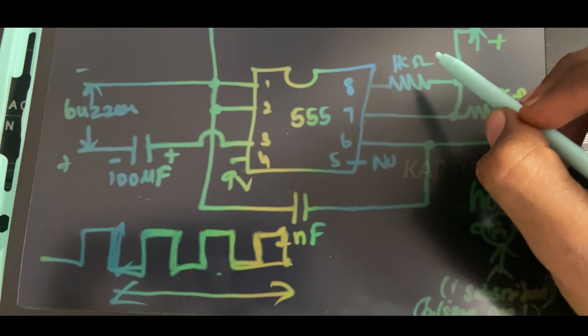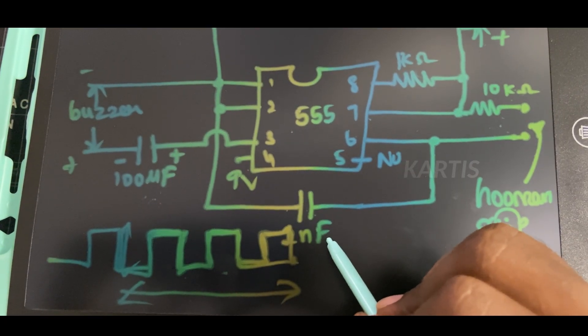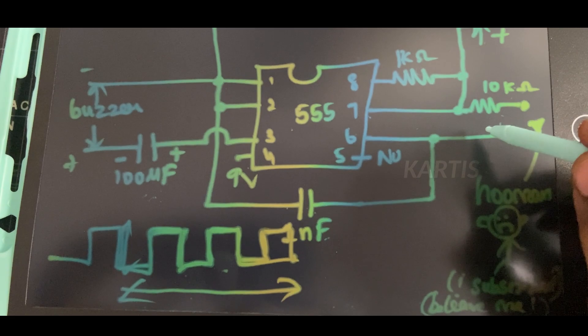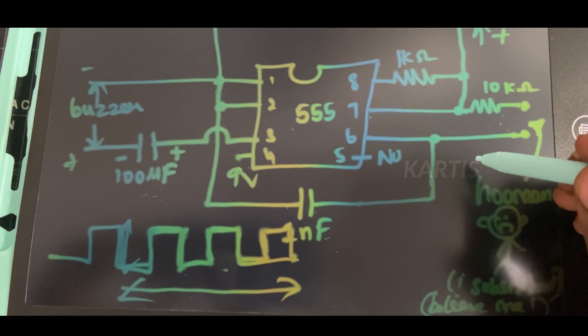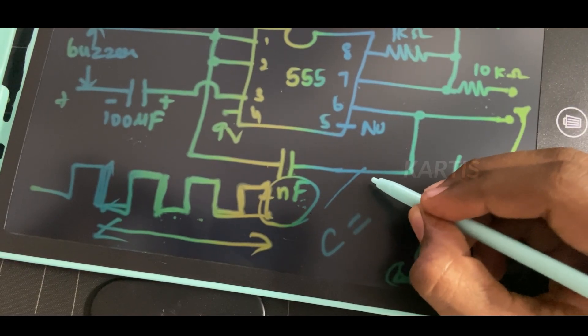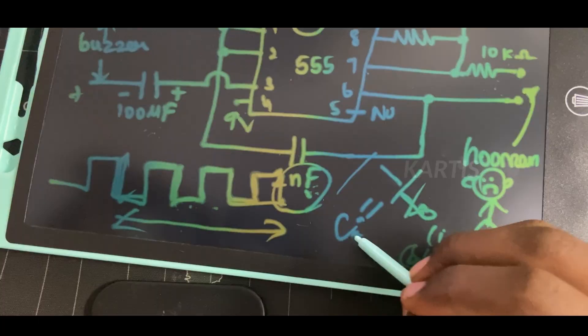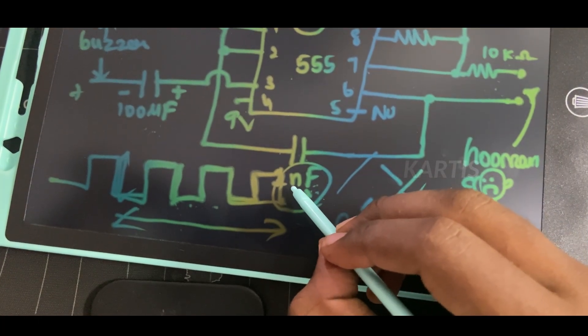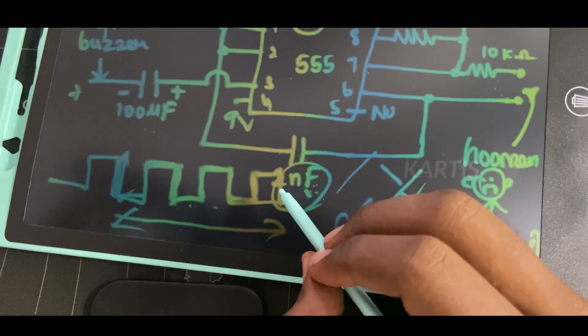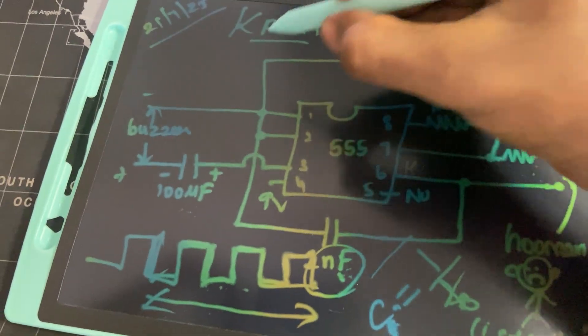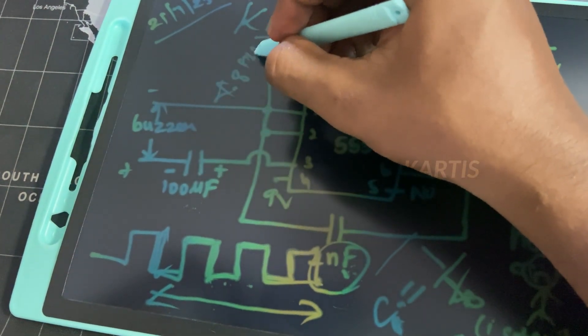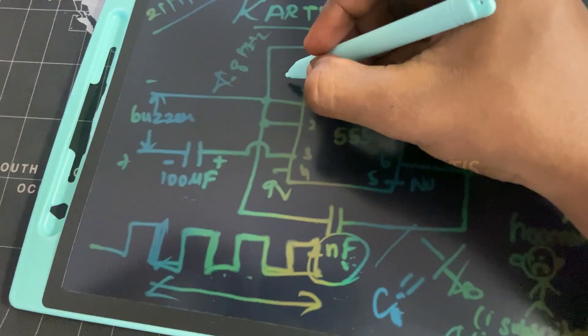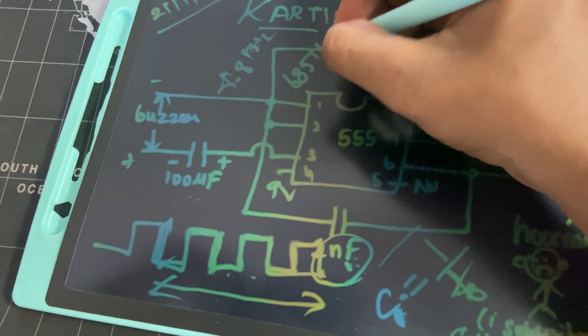This 1 kΩ resistor and this capacitor determine the charging time. This 10 kΩ helps to charge and discharge. Capacitor value is directly proportional to frequency. If you increase the capacitor, the frequency changes. If I go to 1nF or 10nF, the frequency changes. I said 4.8kHz, but it's actually 68.5kHz with different component values.